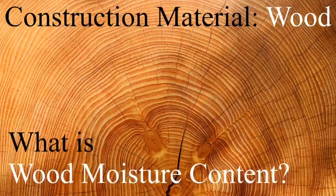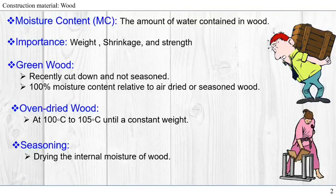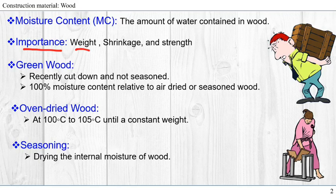So what is moisture content of wood? It is the amount of water contained in wood. The importance of moisture content is that it affects the weight, shrinkage, and strength. The higher the moisture content, the higher will be the weight, and below FSP (fiber saturation point), the moisture content affects whether there is shrinkage or swelling, and it also affects the strength.